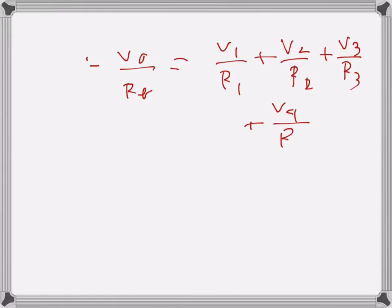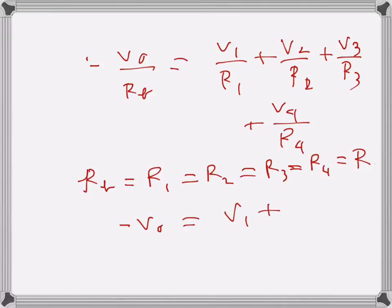Now, for a certain case, we can assume or we design the circuit such that RF and R1 is equal to R2 is equal to R3 is equal to R4 is some value, let's say R. So all the resistances are of the same value. Then we can cancel them out.